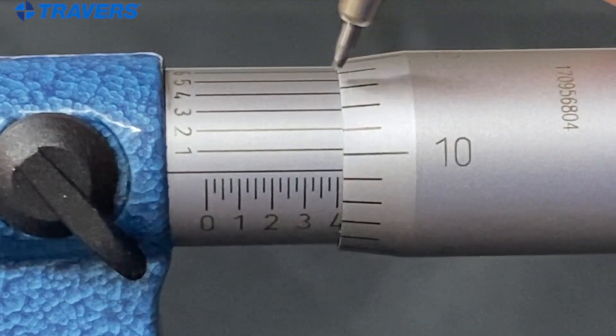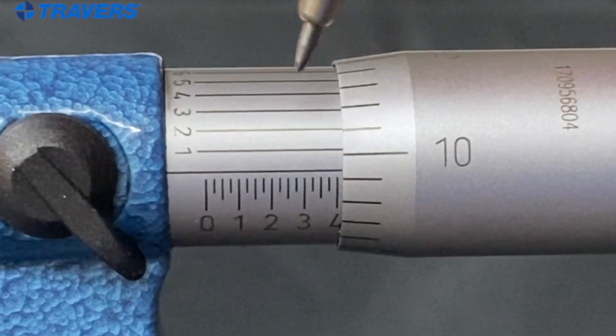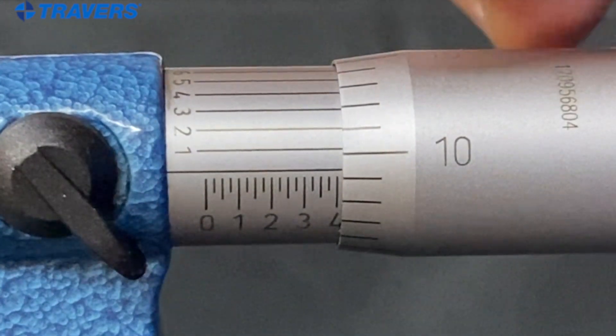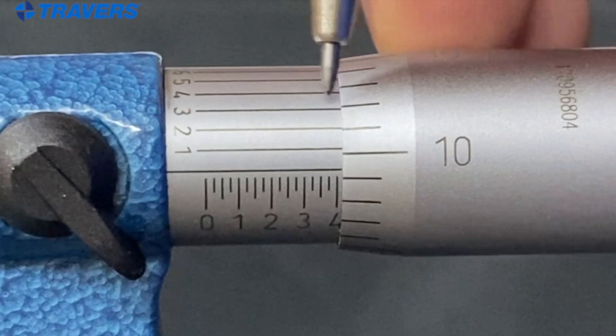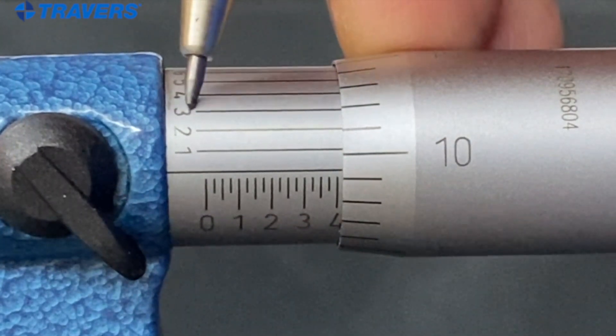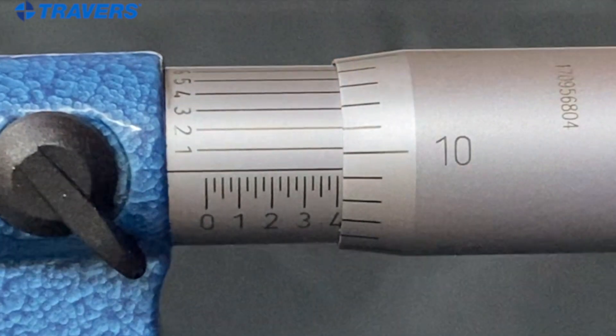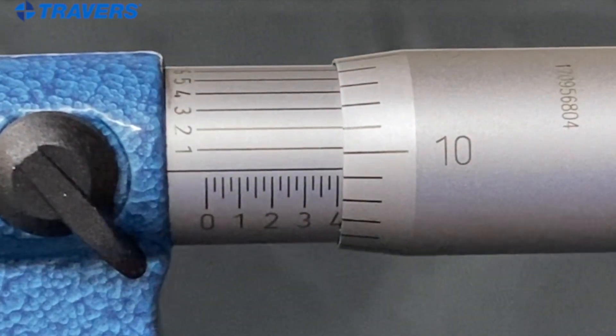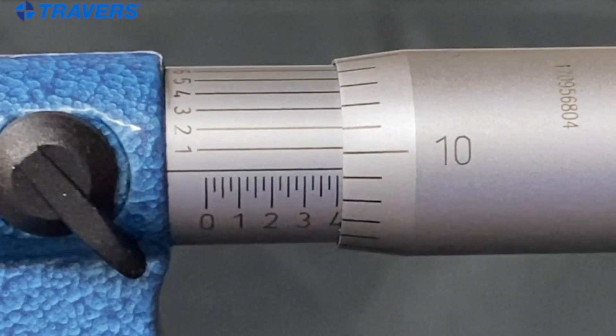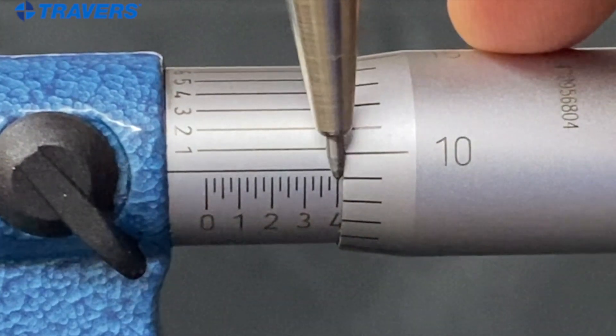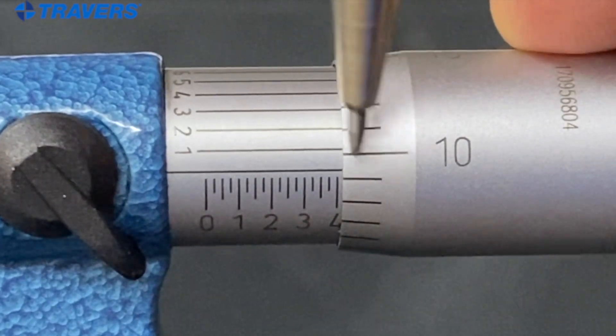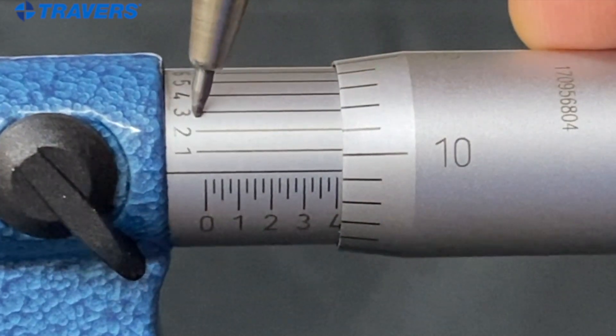And then we'd have to go around the back and see which one lines up. You can't really see it from the angle of the camera, but the line that lines up is the three. So this is a point four, what did I say? Point four zero nine three. Again, here's the four. Here's the nine. And here's the three.